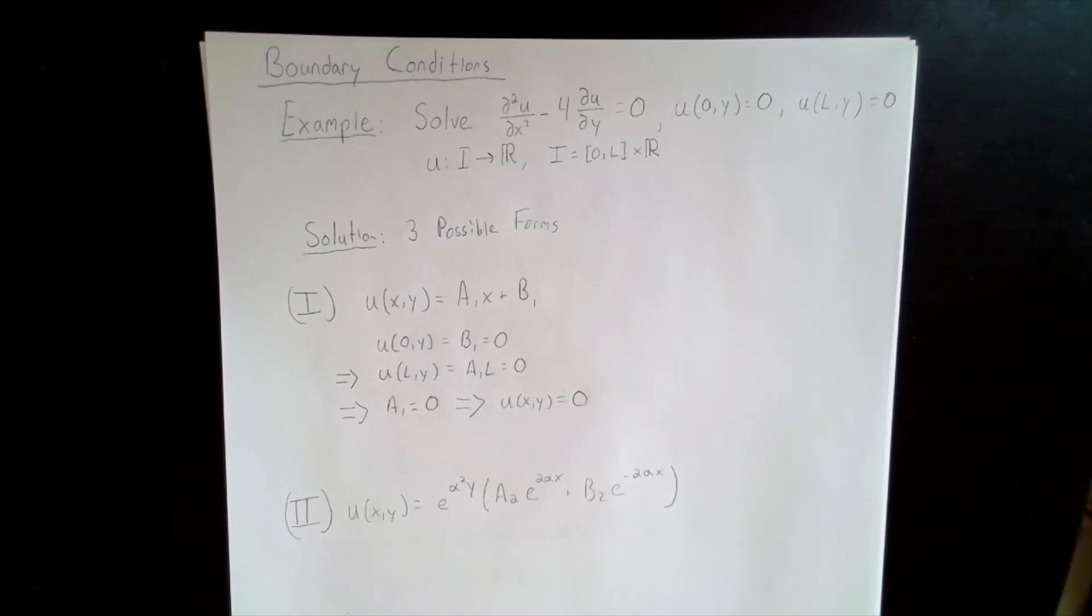Our first family of solutions for our PDE were simple linear functions in x. Applying the boundary conditions, we see that they imply that both the free parameters are equal to 0. In other words, the only function of this type which satisfies our boundary value problem is the trivial solution u equals 0.